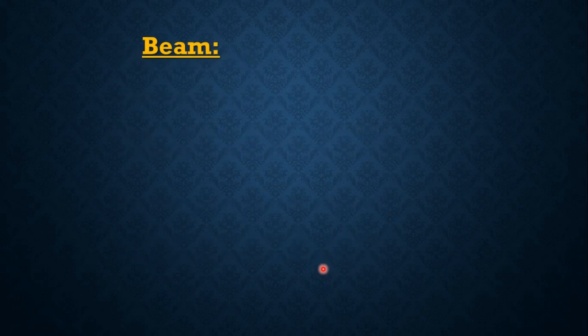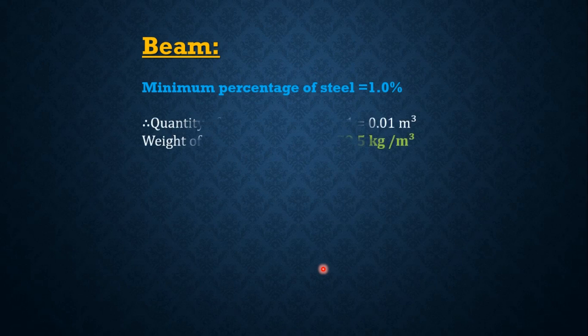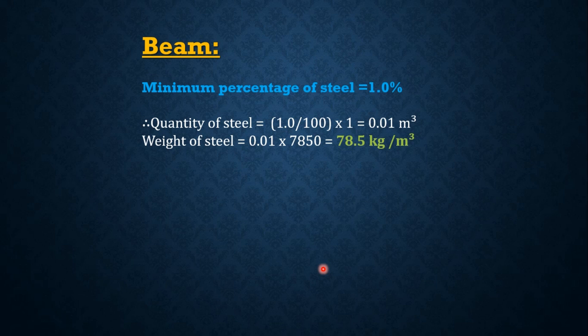Now let's see how much quantity of steel is required in a beam. The minimum percentage of steel required in a beam is 1%. Therefore, the quantity of steel required in a beam equals 1 divided by 100 multiplied by 1, which equals 0.01 meter cube. The weight of the steel equals 0.01 multiplied by 7850, which is equal to 78.5 kg per meter cube.